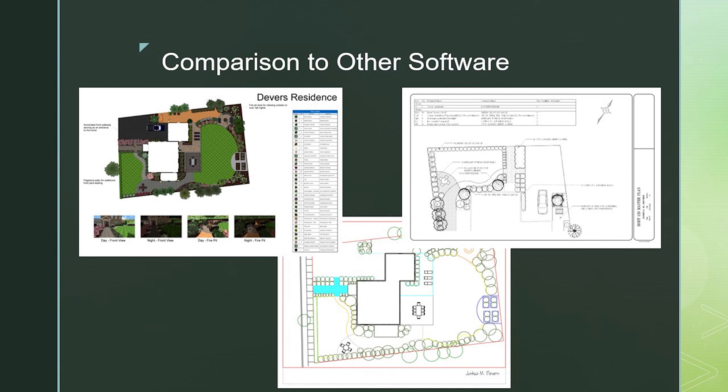Overall, looking at Realtime from a cost and performance perspective, the choice is clear. Realtime Landscape Architect is only $400 and for the price you pay, you can get a lot out of it. Perhaps the biggest selling feature of Realtime is that it provides a 3D perspective to really visualize your landscape space for clients. This concludes my project on Realtime Landscape Architect — thank you for watching.